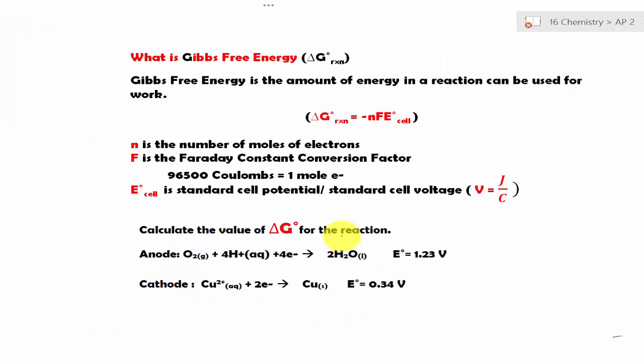Let's try another problem where we have to calculate the ΔG for the reaction. Again, we have the two half cells, anode and cathode. But the E°_cell is given in reduction potentials. So this has to be oxidation.